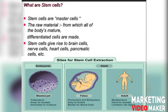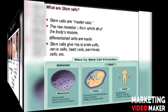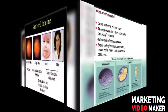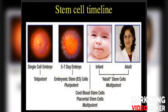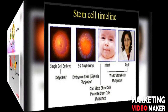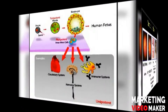Depending upon the stages: a single-cell embryo is at the totipotent stage, a seven-day embryo is at the pluripotent stage, and infant and adult cells are at the multipotent stage. In the totipotent stage, the cells can differentiate into an entire organism, resulting from the fusion of egg and sperm.